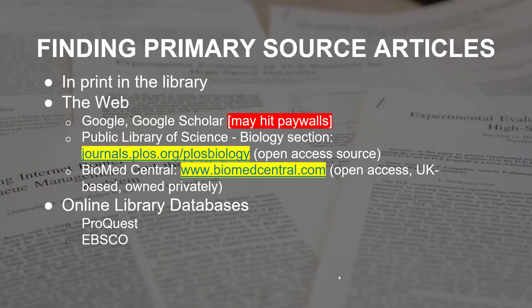There are multiple ways to find primary source articles. One would be in print in the library, but with the campus closure, since we can't access the physical library building, you'll have to rely on the internet. One way on the web is using Google or Google Scholar. Even though Google and Google Scholar are free and easy to use, you may hit paywalls where the website will ask you to pay extra money to access the full article. But as your friendly librarian, I'm here to show you the free ways you can access primary source articles.